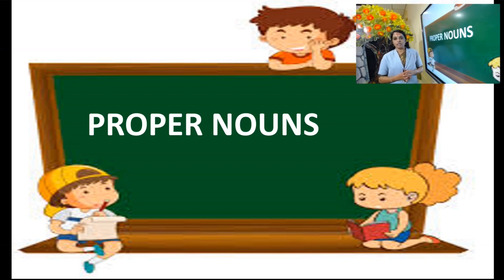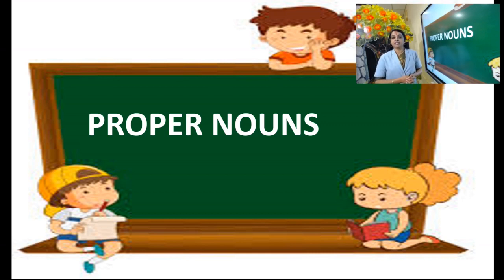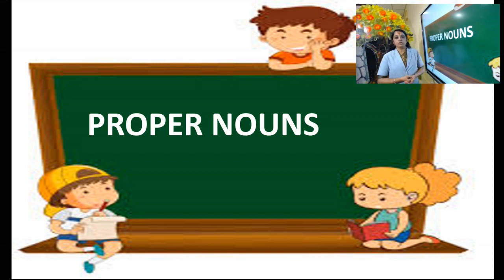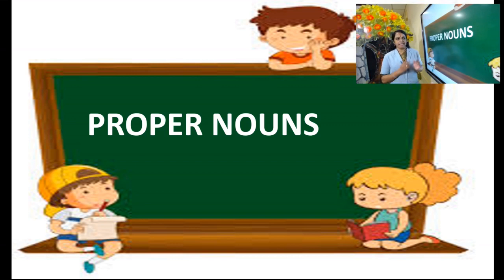A common noun is a name given in general to a person, place, thing, animal, etc. If I say a dog, it's a common noun. A man is a common noun. A boy — common noun. A girl — common noun. So a name given in general is a common noun. Then what is a proper noun?